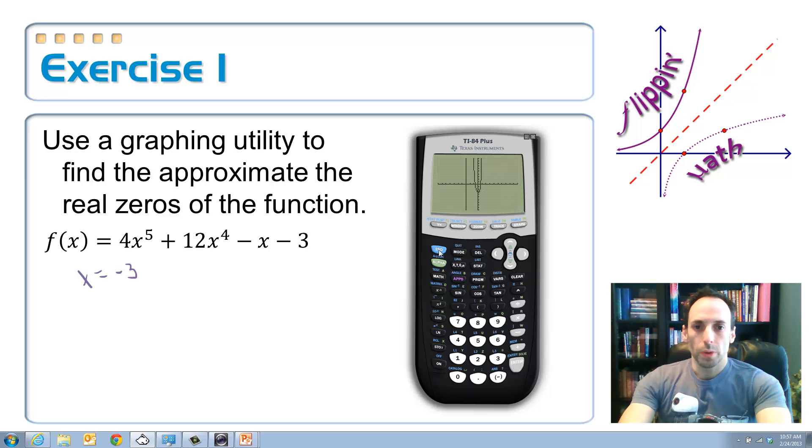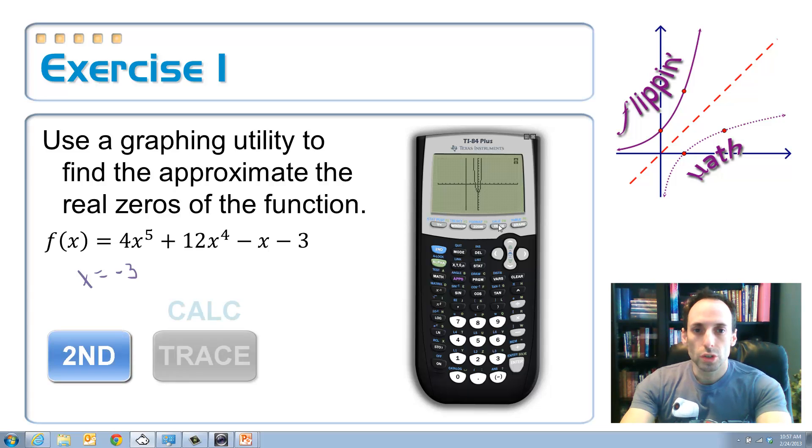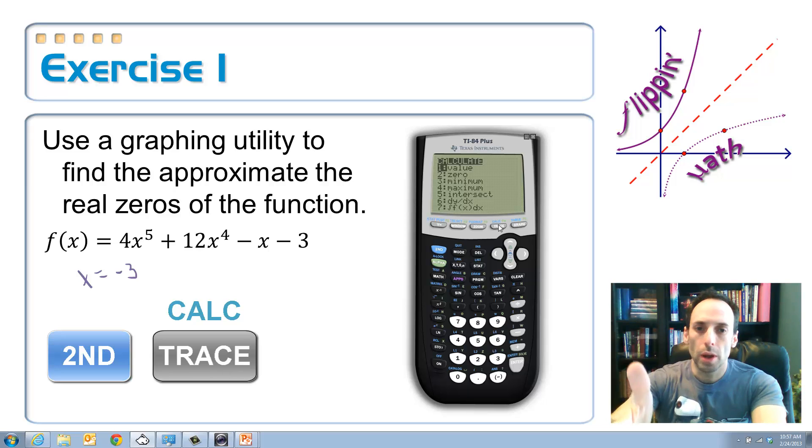Second, trace for the calculate menu. Take a look at those menu items. Which one does it make sense we're going to find? That's right. Number 2, zero. So, pick that one. Scroll down to it.